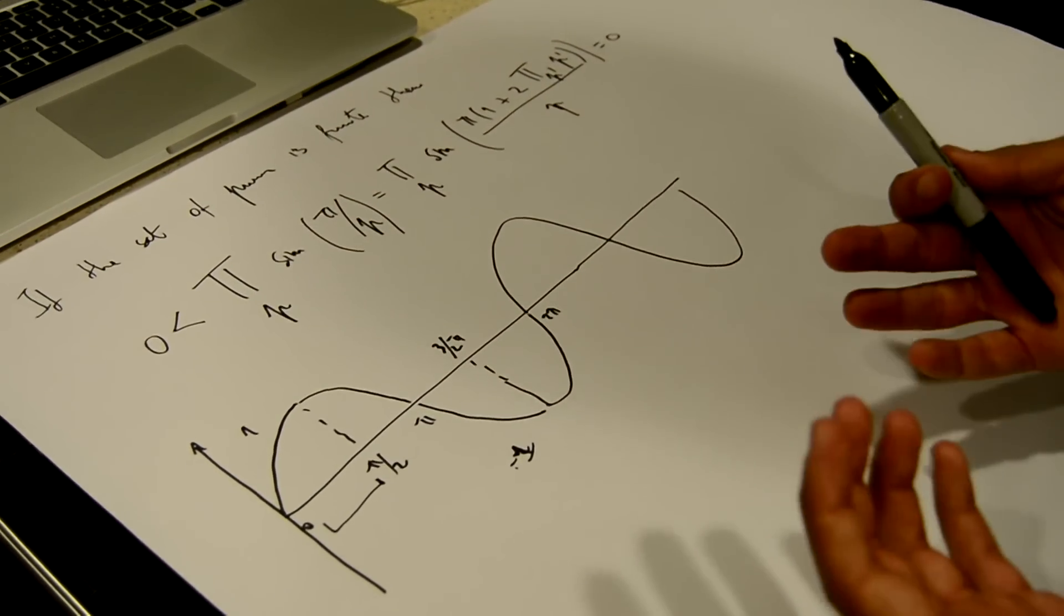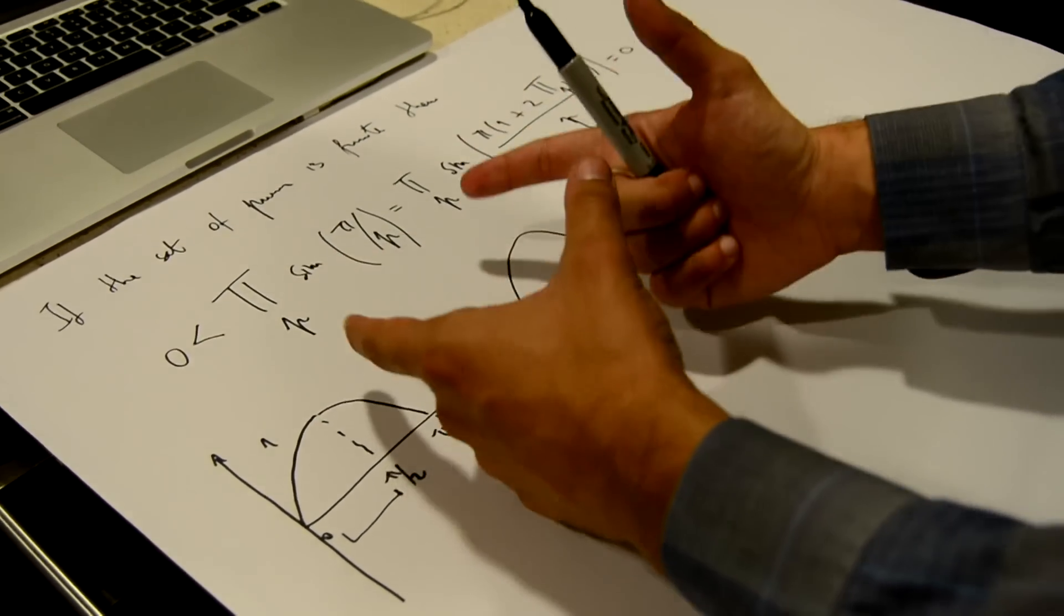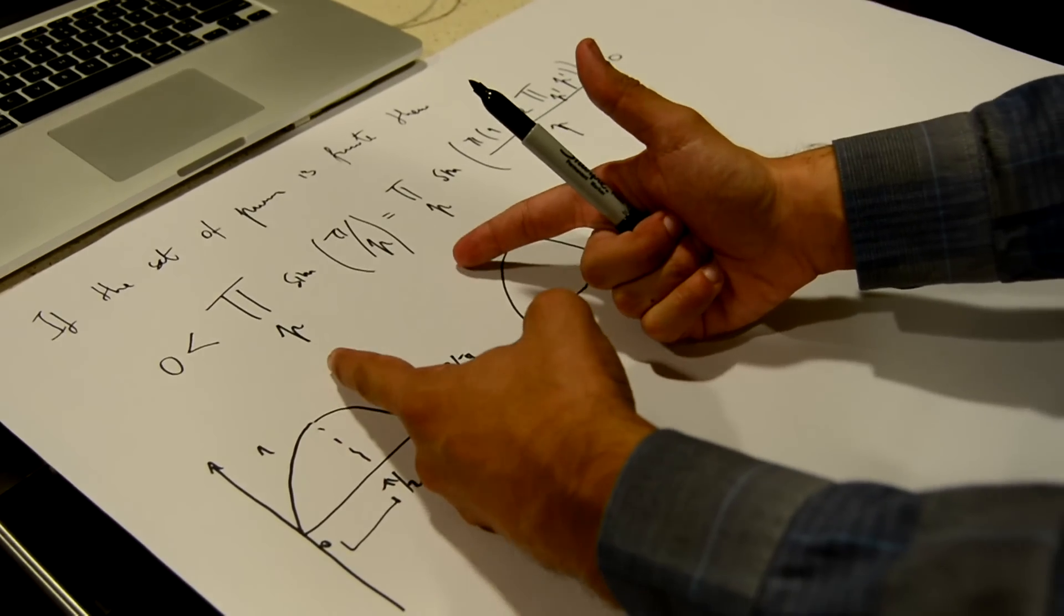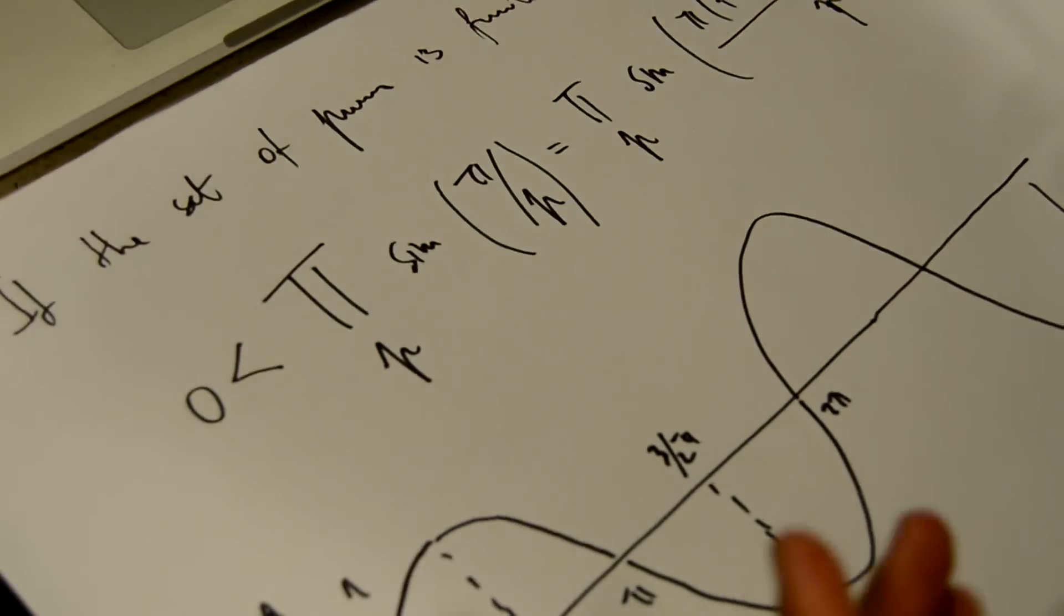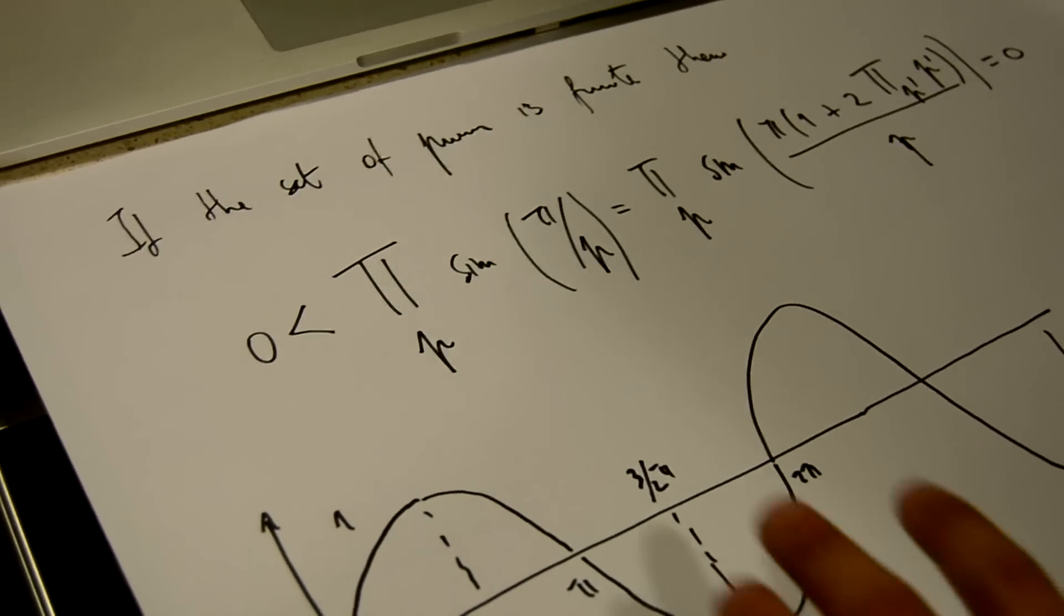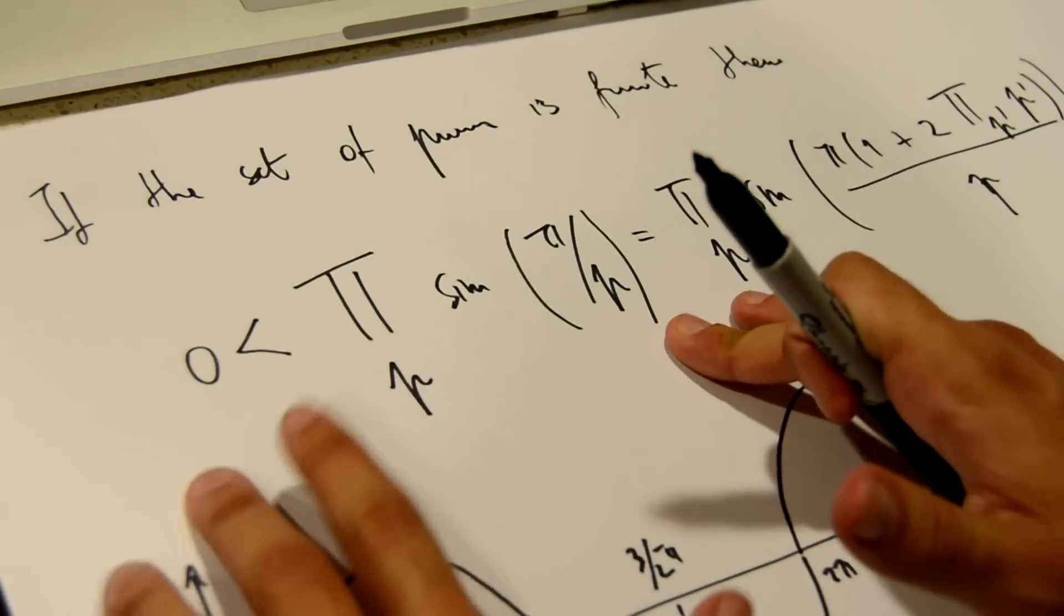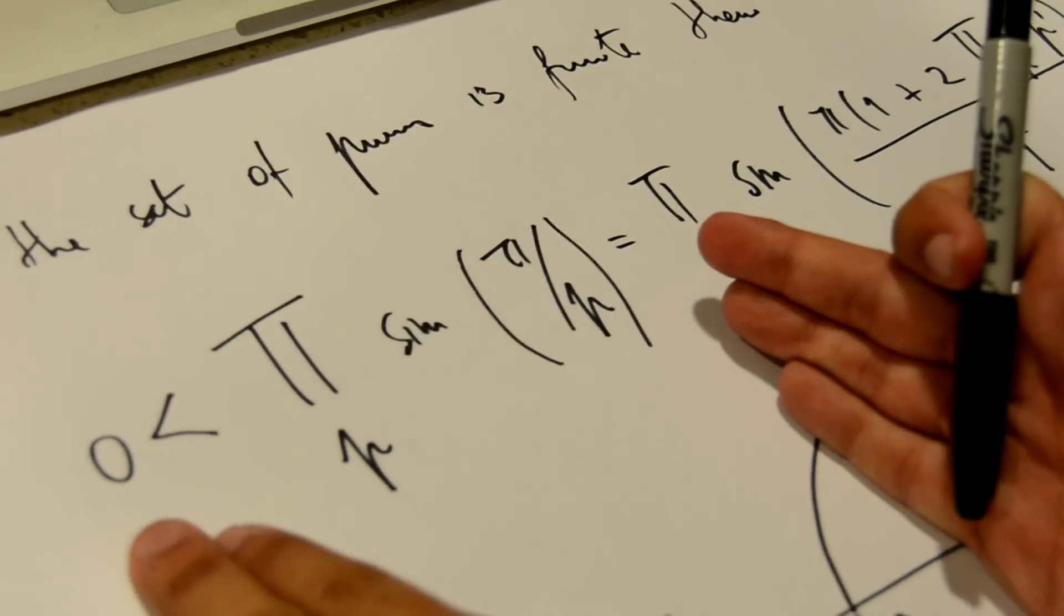It is really important to notice that this is a finite product and not an infinite product. Because infinite products can converge to zero even if all the terms are positive. And so this is the fact that allows us to conclude that this is greater than zero. So the first part was accomplished.